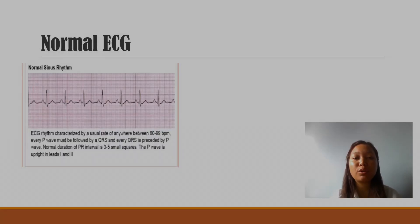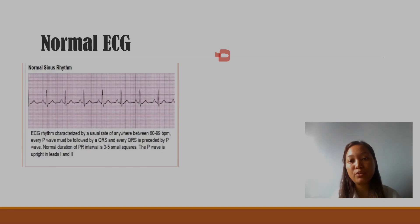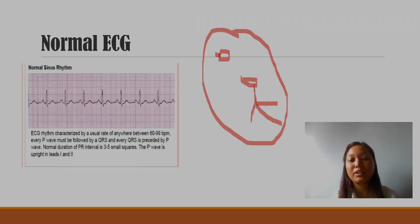I want to give a quick review on normal ECG. What is normal ECG? There is a conduction system in our heart. There is a sinoatrial node followed by the atrioventricular node. This is the bundle branch, and you can see the parts of the branch. There is a sinoatrial node, your atrioventricular node, and your branches.